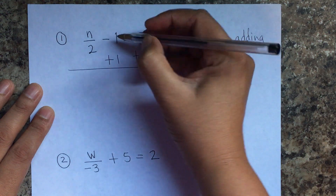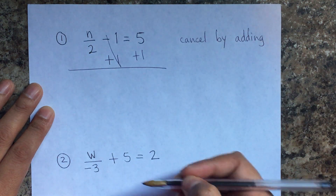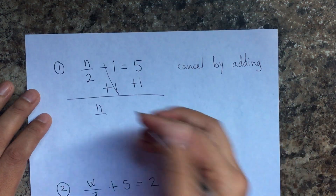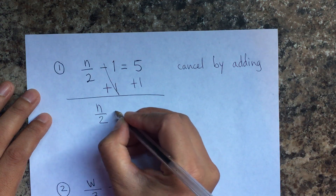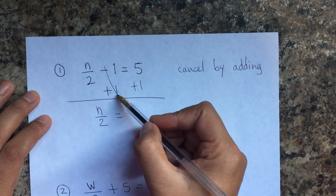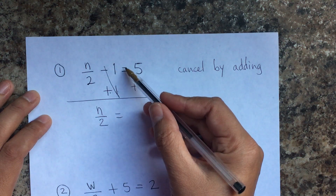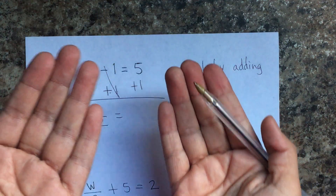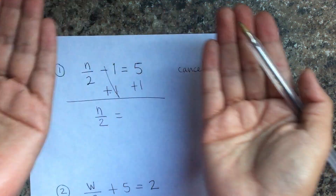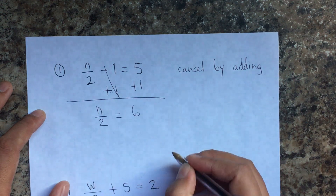Negative one and positive one is like owing one dollar and paying one dollar — so that cancels. You owe zero now. Then n divided by two equals — on the other side, when we add here to cancel, we have to add it on the other side too to keep the equality. So five plus one is six.